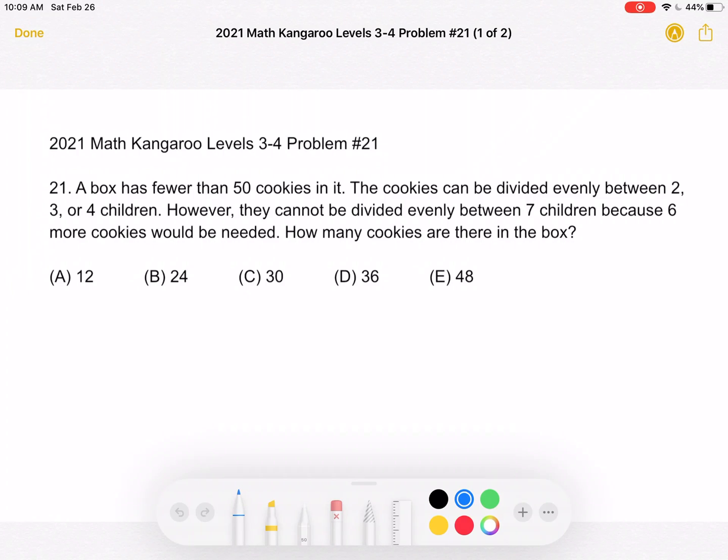This is the 2021 Math Kangaroo Levels 3-4, problem number 21. A box has fewer than 50 cookies in it. The cookies can be divided evenly between 2, 3, or 4 children. However, they cannot be divided evenly between 7 children because 6 more cookies would be needed. How many cookies are there in the box?